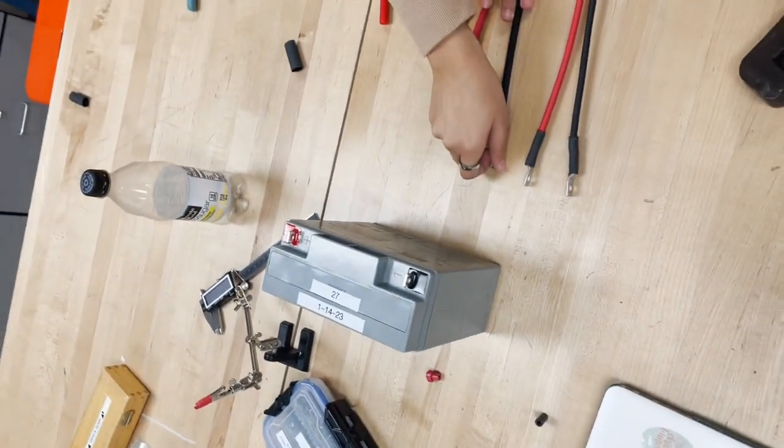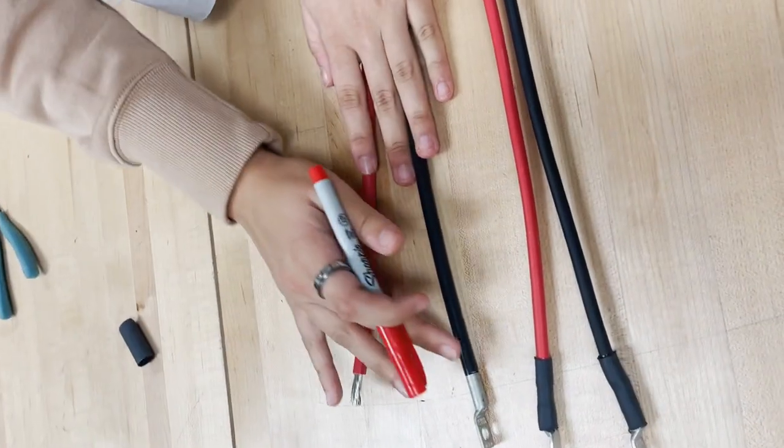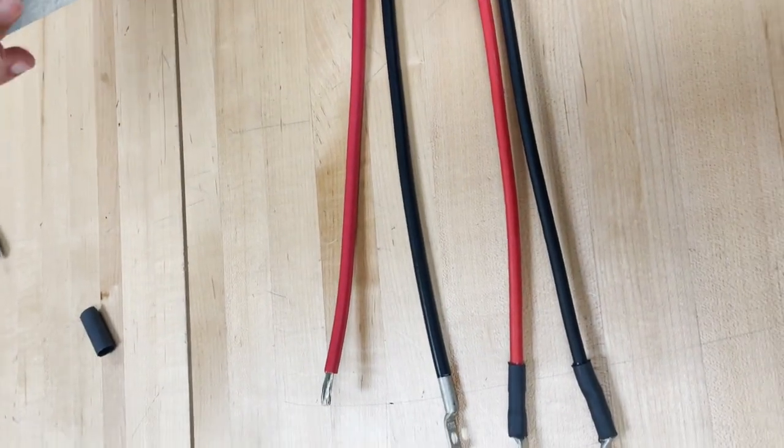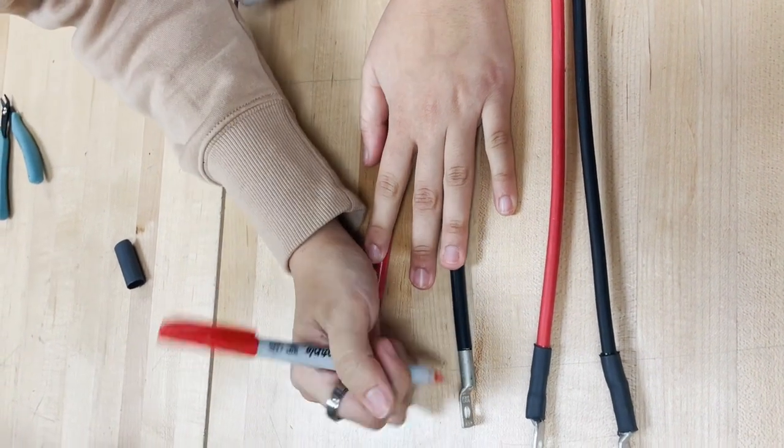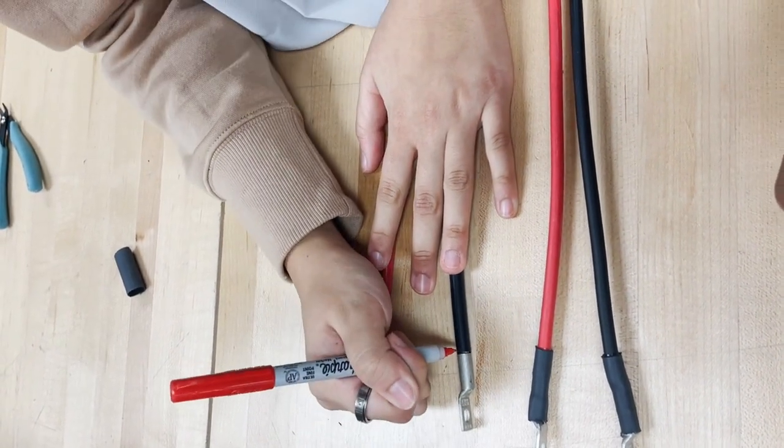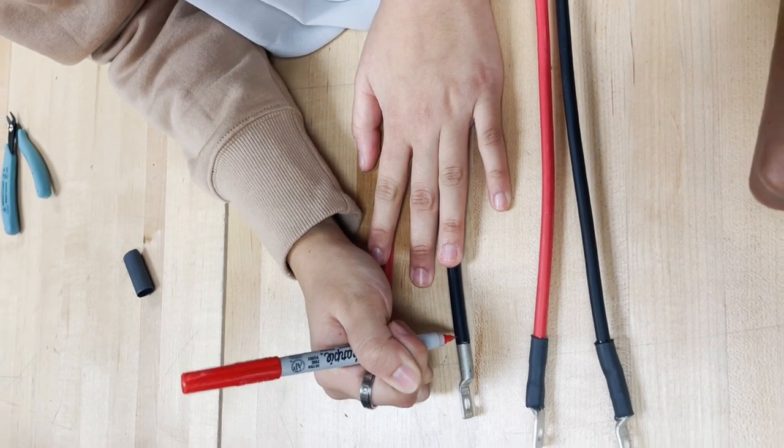Now that we have this in the correct place, we want to mark it with a marker so that when we go on to our next step of crimping, we can line it up correctly and make sure that none of the strands are coming out.